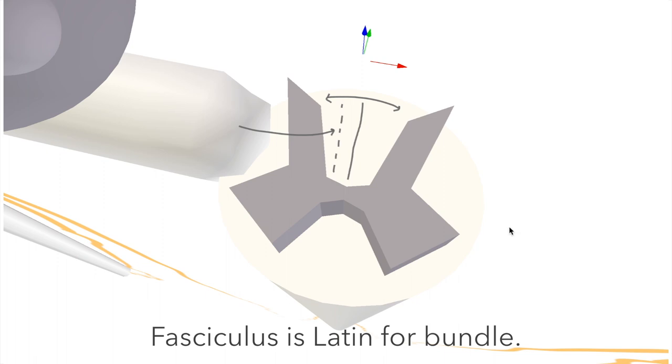One called gracile and one called cuneate. And if the nerve we were talking about is coming from the legs, it would be in the gracile bundle, because gracilis is in the leg. If the nerve is coming from the arms or the upper body, it will be in the cuneate bundle.